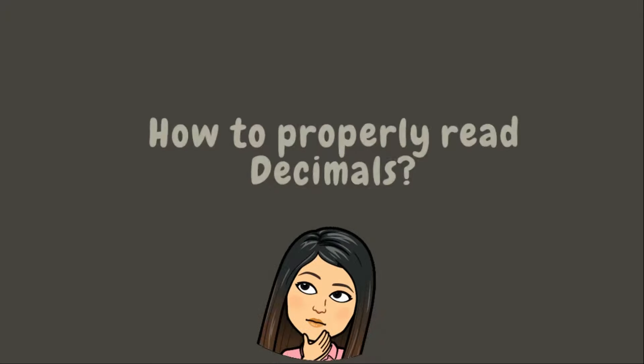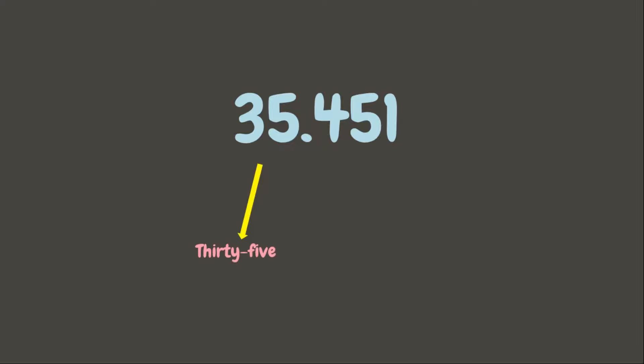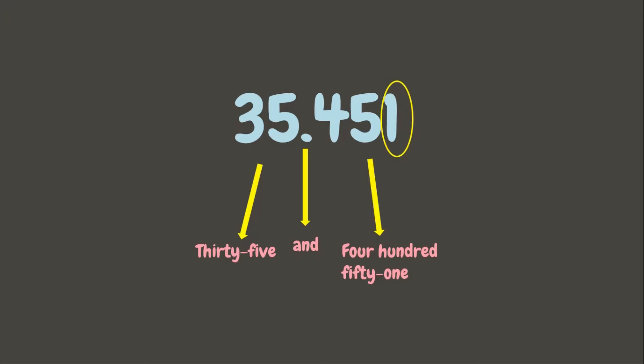Now, how do we properly read decimals? We usually read a decimal like 35.451 as 'thirty-five point four hundred fifty-one,' but the proper way is: first, we read the whole number — that is thirty-five; then we read the decimal point as 'and'; then we read the decimal part as 451; and add the place value of the last digit. The place value of one is thousandths. Therefore we read this decimal as 'thirty-five and four hundred fifty-one thousandths.'